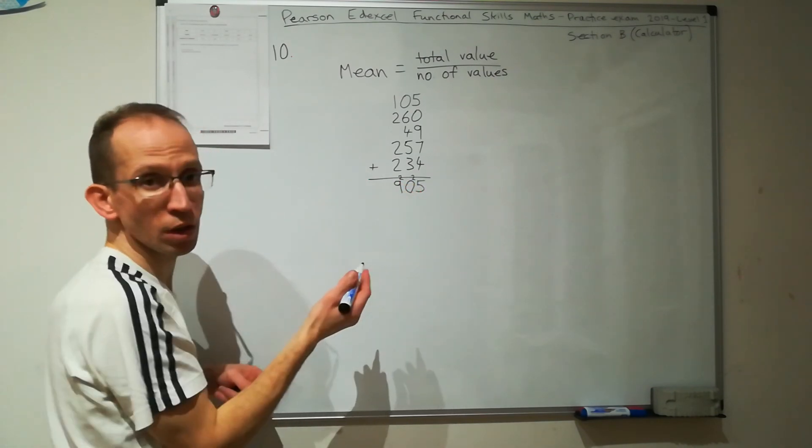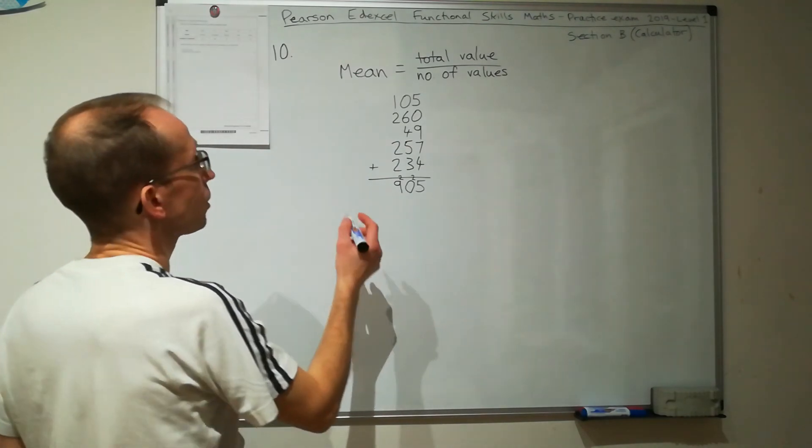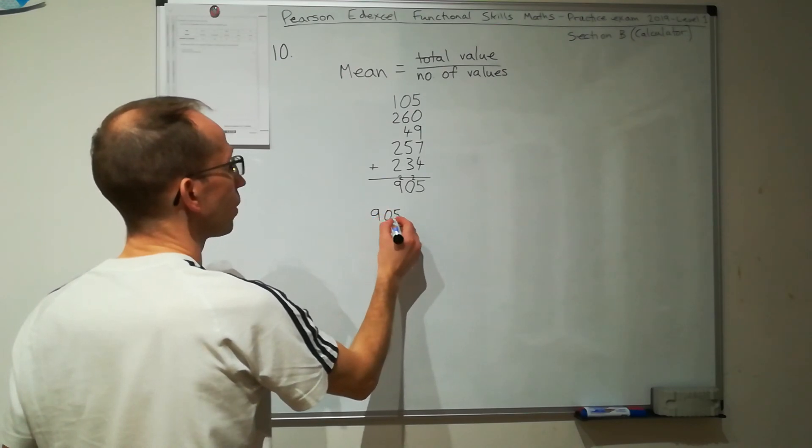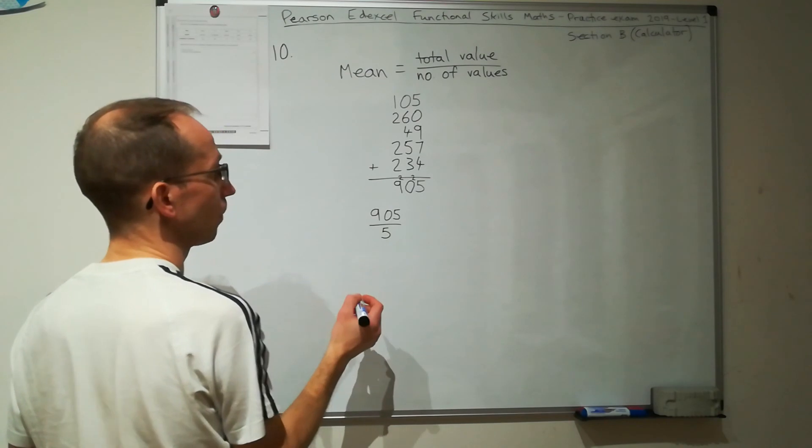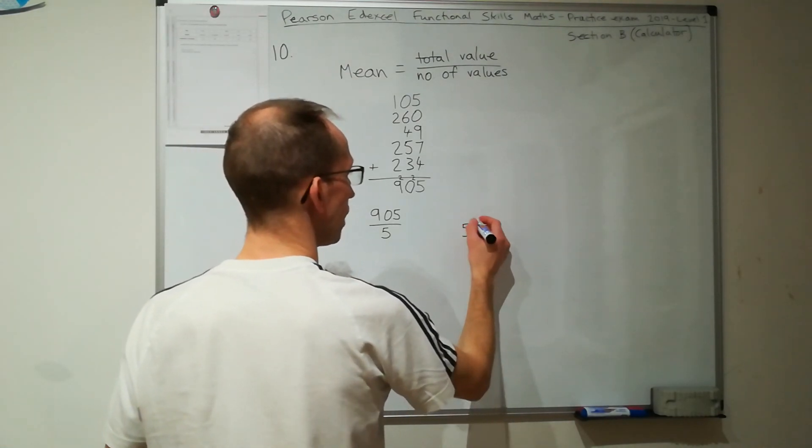We could have used our calculator, but it doesn't take very long to do it that way. We've got the total value, now we want 905 divided by 5. I'm going to do this using the bus stop method. Again, you can use your calculator.